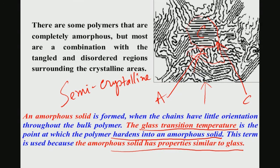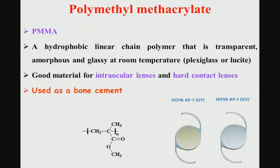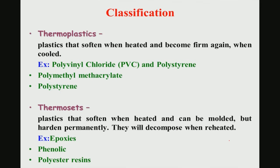Once a polymer goes to the amorphous state, the chains have little orientation throughout the bulk — in other words, chains will have an extremely random arrangement throughout the bulk of the polymer, and therefore you cannot do much further working on these polymeric materials.